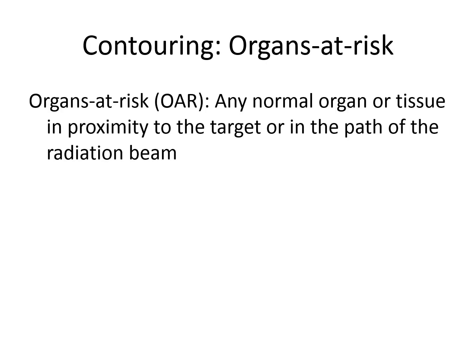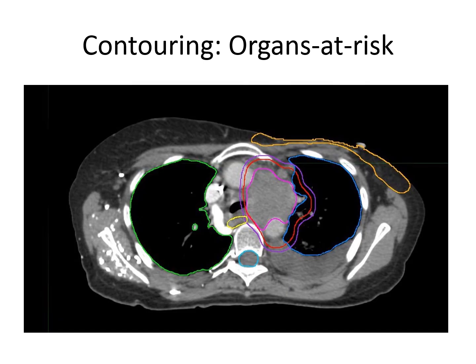Next, we'll talk about organs at risk, or OARs. OARs are any normal organ or tissue in proximity to the target or in the path of the radiation beam. Here, I have contoured both the lungs, the spinal cord, and the esophagus for this patient, as well as contouring the prior site of mastectomy to account for any prior post-mastectomy radiation that the patient may have received.